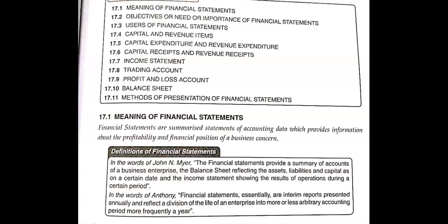Let's start with the Financial Statement definition: Financial statements are summarized statements of accounting data which provide information about the profitability and financial position of our business concern. This is summarized data. The amount of data we record from the beginning, we summarize it and give information about what is the financial position of our business — this is a summarized statement of the entire accounting data which gives us information about our profits and financial position.